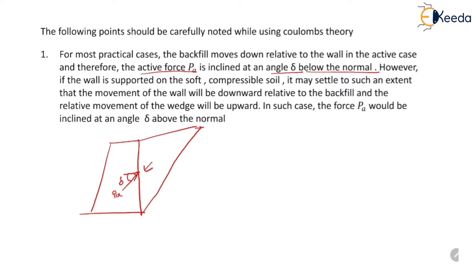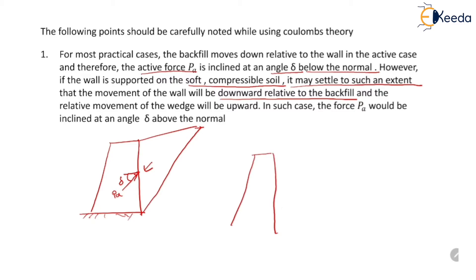However, there are cases when the retaining wall is supported on soft and compressible soil such that it may settle to such an extent that the movement of the wall is downward relative to the backfill. In that case, the downward movement of the wall is more than that of the backfill, and the active pressure PA would be inclined at an angle delta above the normal.